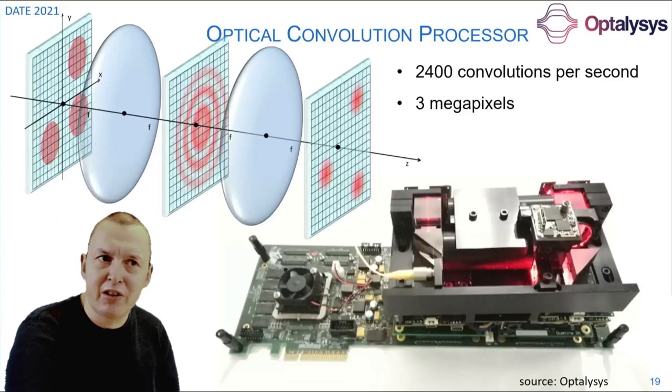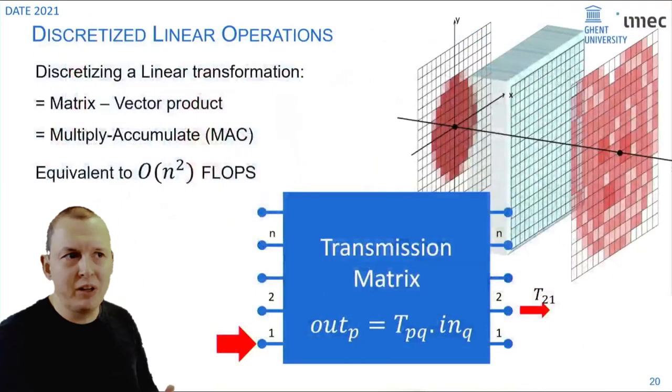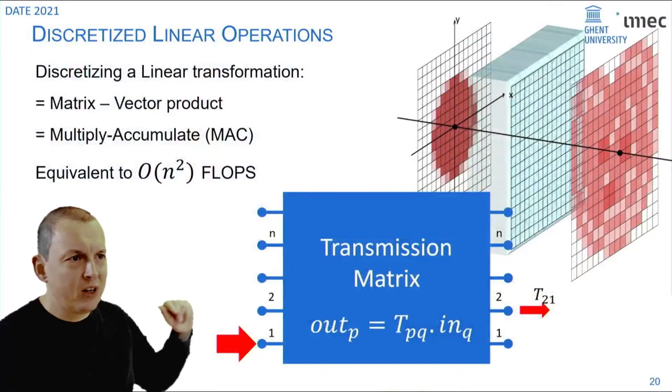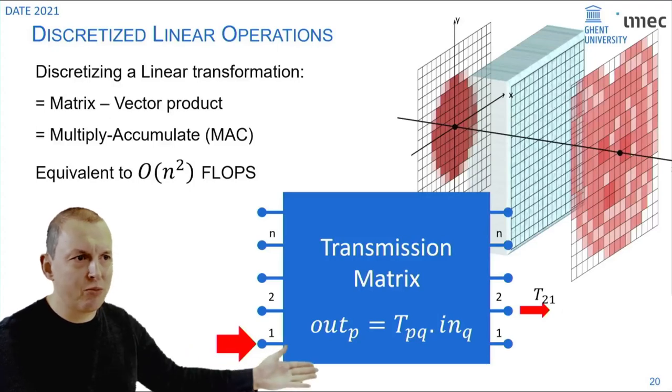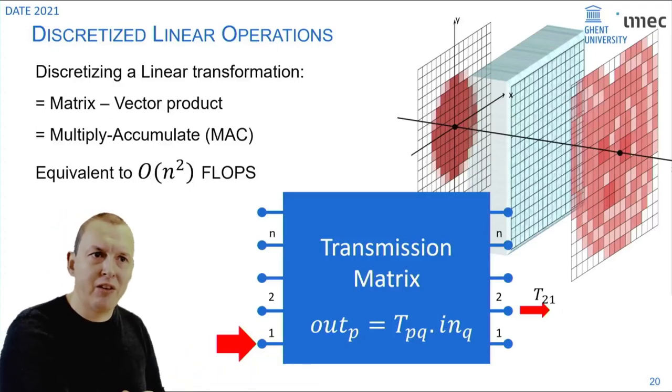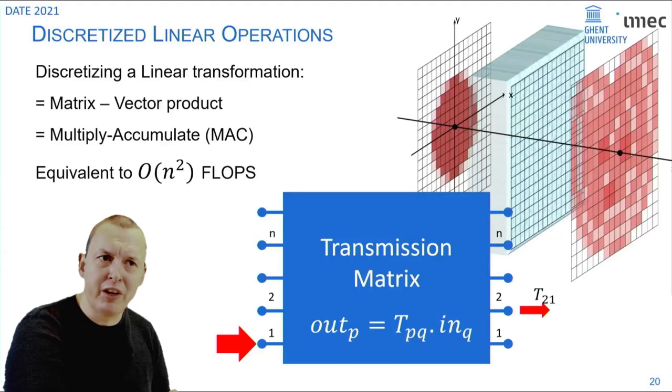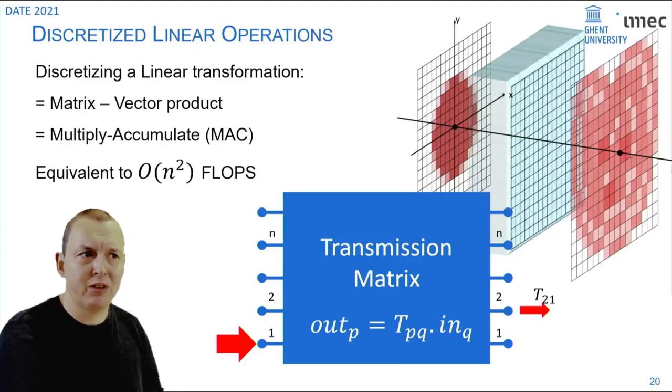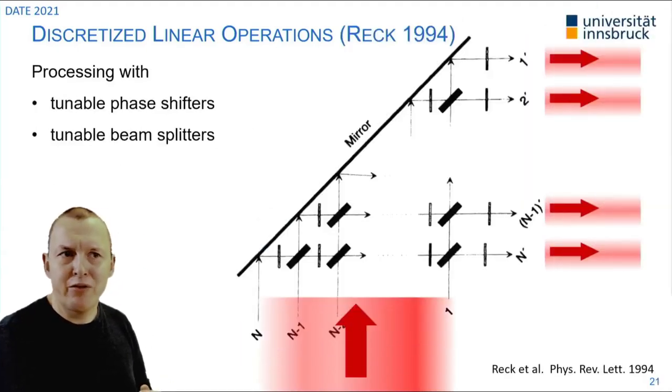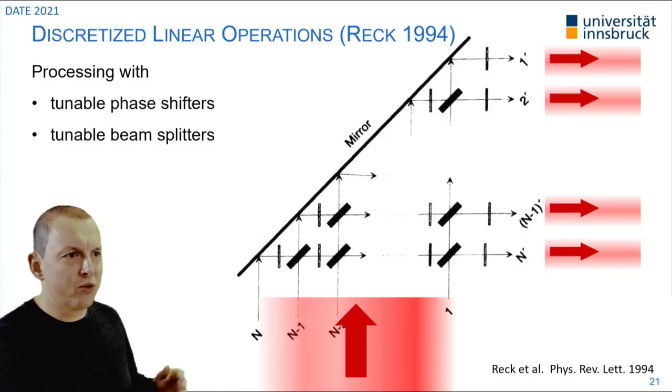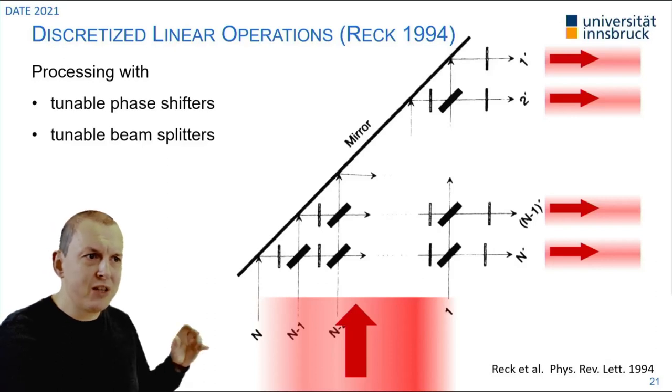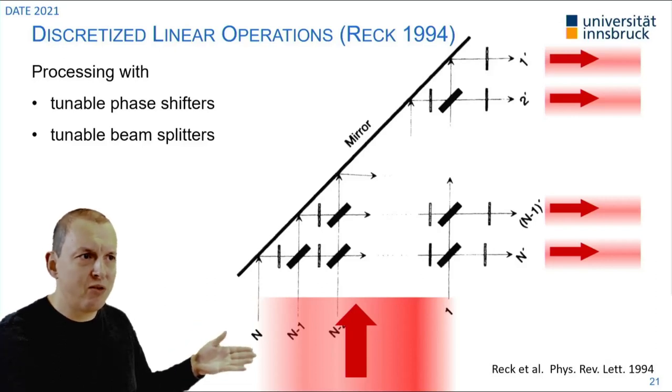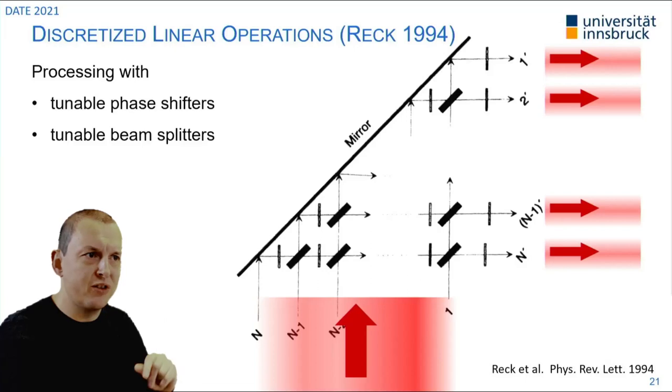If you want to generalize this kind of processing you need a way to build a photonic system that can generate an arbitrary transmission matrix between your input pixels and your output pixels. The first to come up with a good idea to implement such a general purpose system was REC in 94 who proposed to use a matrix of tunable phase shifters and tunable beam splitters to transform a discretized beam into any other combination and build an arbitrary transmission matrix.